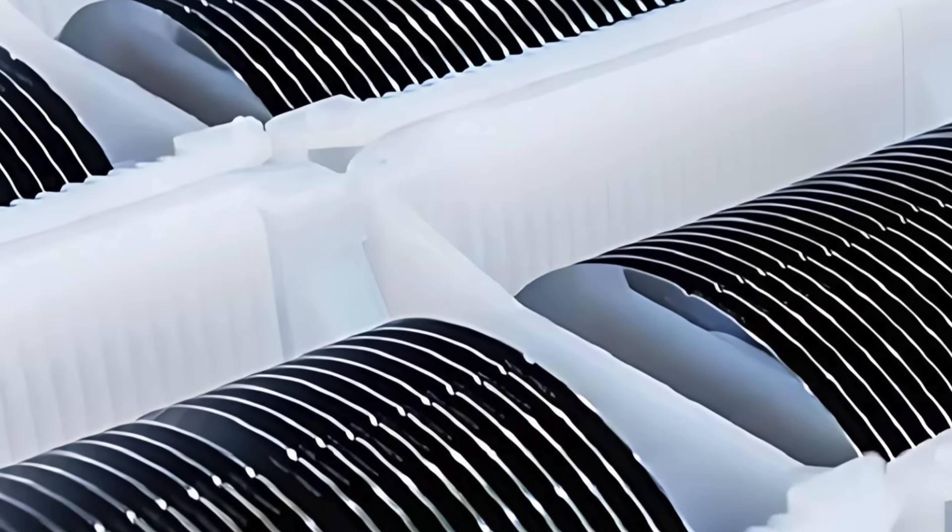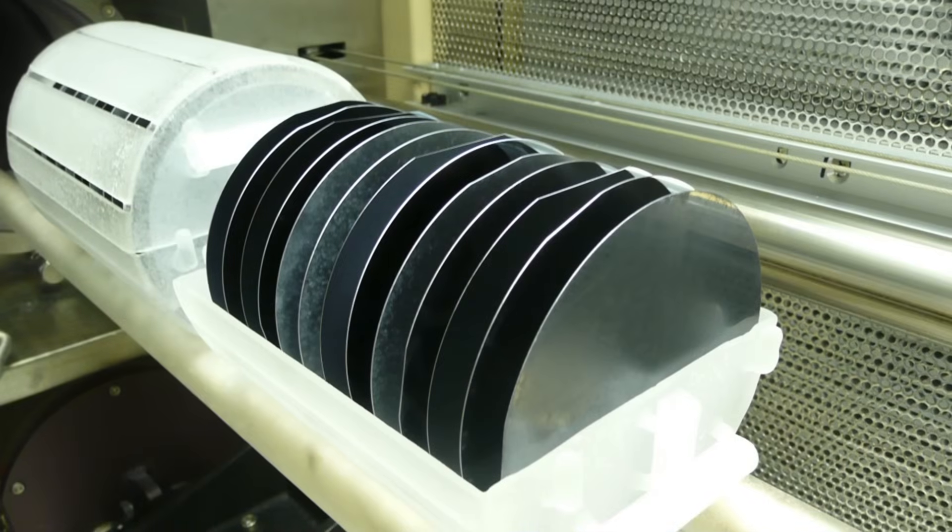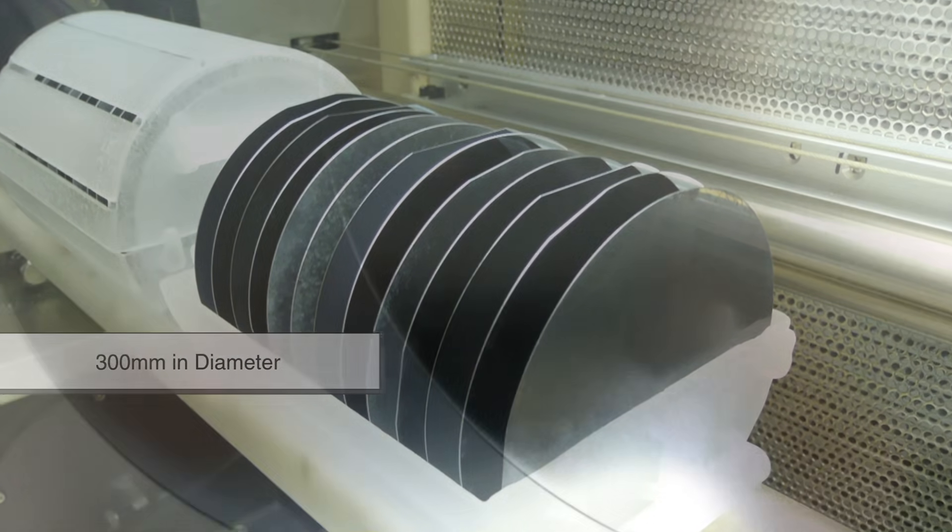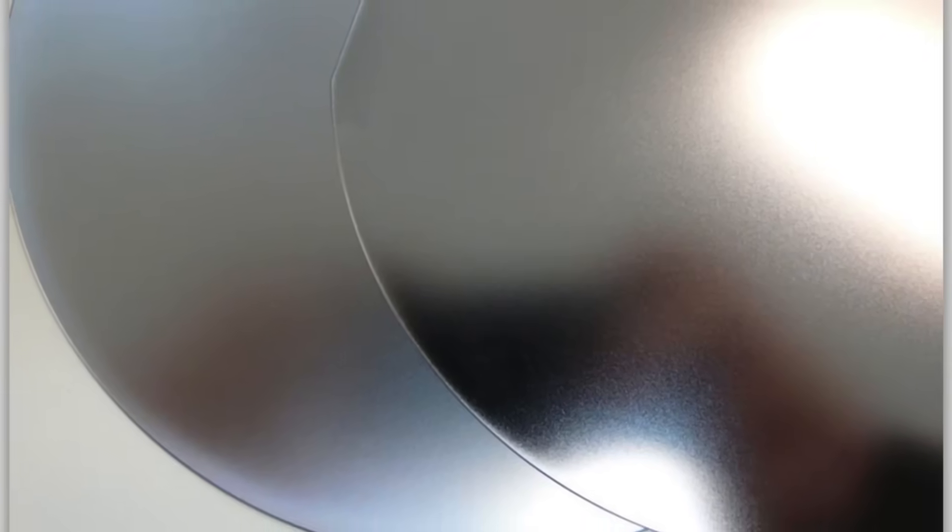Once the ingot is grown, it is precisely sliced into thin wafers using a diamond saw. These wafers, usually 300 mm in diameter, are then polished to an atomically smooth surface to prepare them for further processing.